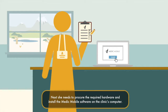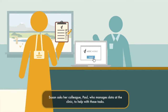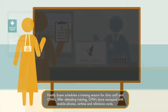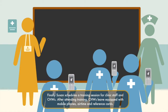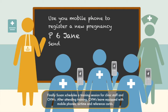Next, she needs to procure the required hardware and install the MedicMobile software on the clinic's computer. Susan asks her colleague Paul, who manages data at the clinic, to help with these tasks. Paul helps Susan purchase hardware and install MedicMobile on the clinic's computer. Finally, Susan schedules a training session for clinic staff and community health workers. After attending training, community health workers leave equipped with mobile phones, airtime, and reference cards.